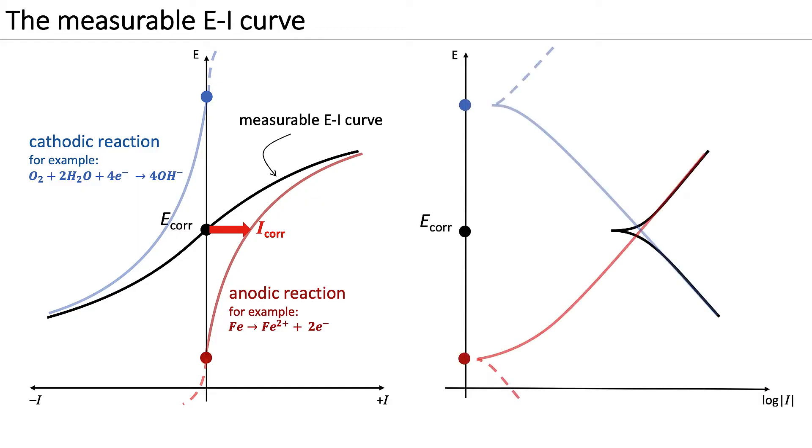Let us plot the potential versus current curves for the logarithm of the absolute value of the current. In this representation, the corrosion current corresponds to where the anodic and cathodic curves intersect.